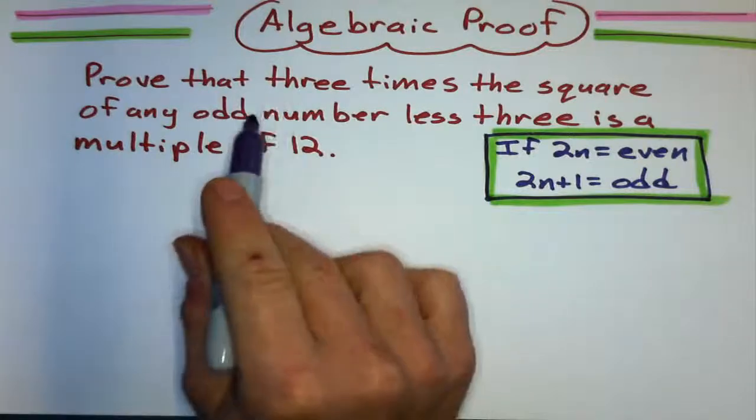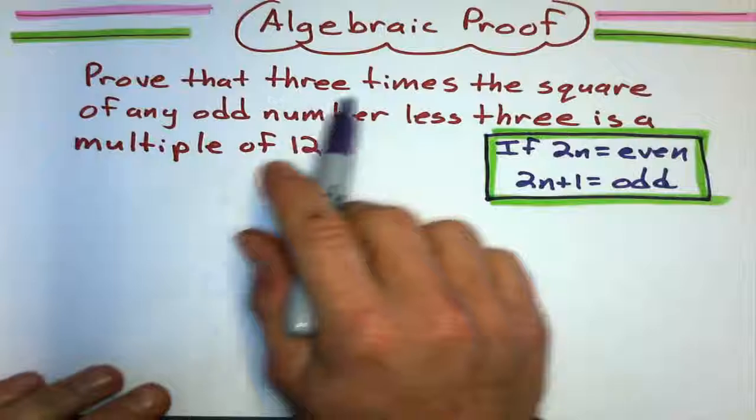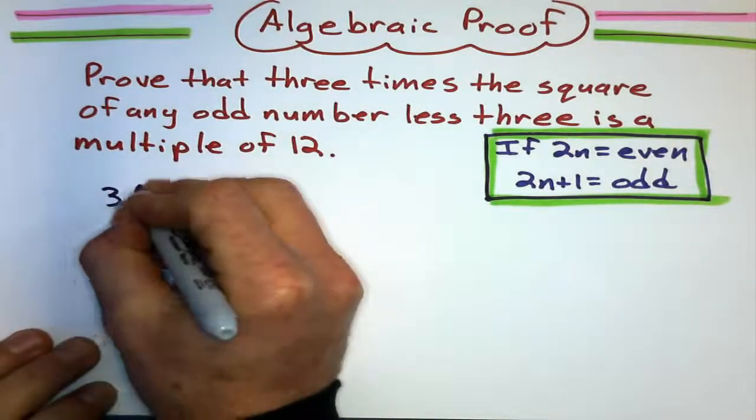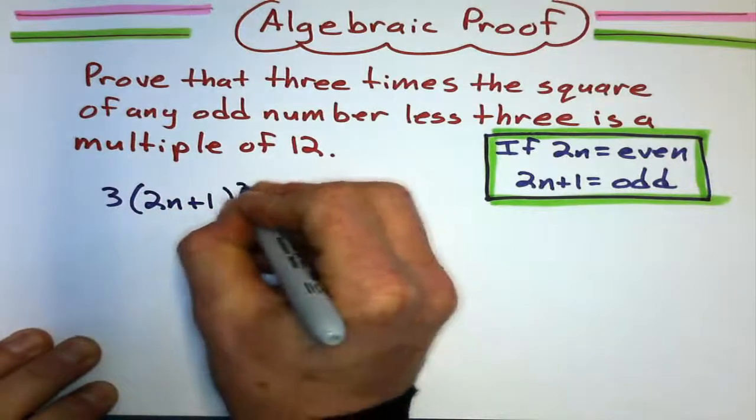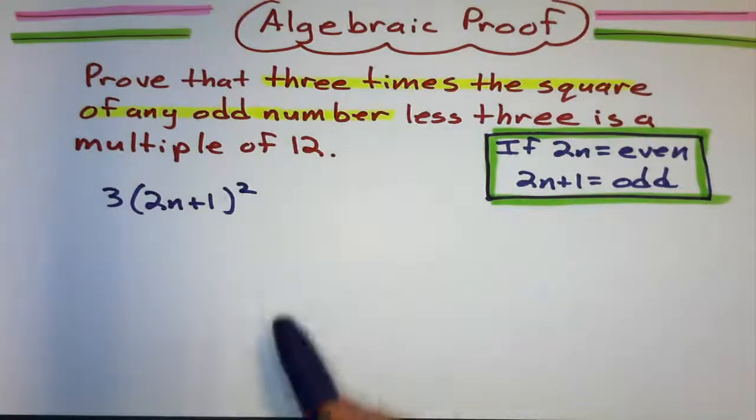Alright, now what I'll do is I'll try to just translate this into an algebraic thing. 3 times the square of any odd number. Alright, 3 times the square of any odd number. That's that bit right there.